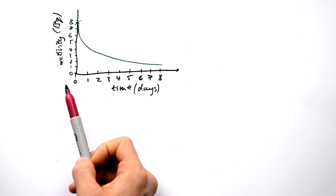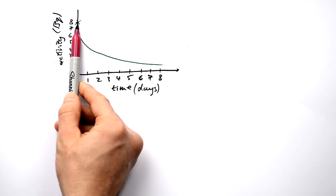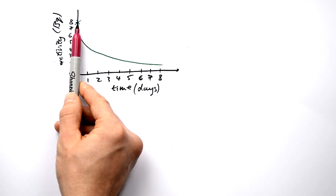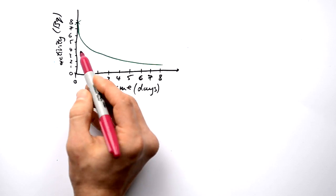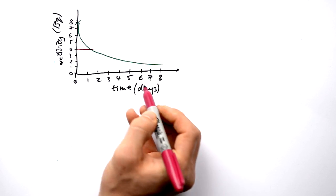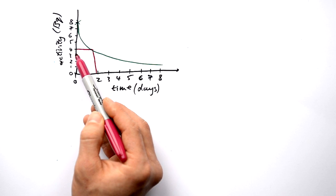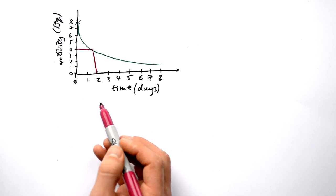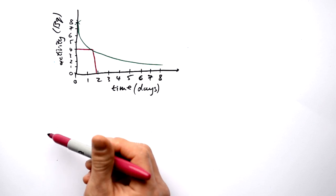Can we find out what the half-life of the isotope is using this graph? Yes, we can. We know the activity started at eight. Once we've gone through one half-life, what should the new activity be? It should be four. Going from four across to the graph and then down, half the initial activity takes us two days. So it seems like the half-life should be two days — but let's check that once more.